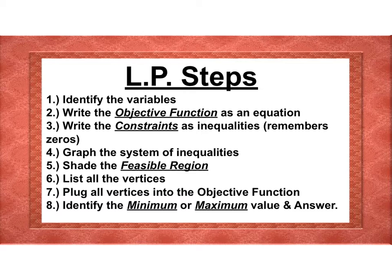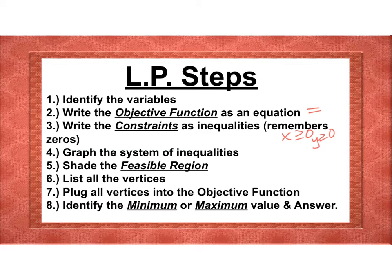The steps are: first, identify your variables — you'll go through a lot of steps and you want to know which variable represents which quantity. Second, write the objective function as an equation equal to profit, cost, or similar. Third, write the constraints as inequalities, and remember to include x ≥ 0 and y ≥ 0 to keep it in the first quadrant. Fourth, graph the system of inequalities — the shaded region is the feasible region. Fifth, list all the vertices as points. Sixth, plug the vertices into the objective function and answer whether you need the minimum or maximum.